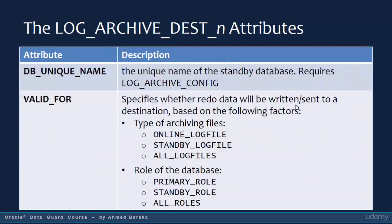DB_UNIQUE_NAME is used to tell the primary database about the unique name of the standby database. VALID_FOR is another important attribute in the LOG_ARCHIVE_DEST parameter. This attribute specifies whether redo data will be written or sent to a destination based on the type of archiving files — online, standby, or all log files — and the role of the database: primary role, standby role, or all roles.